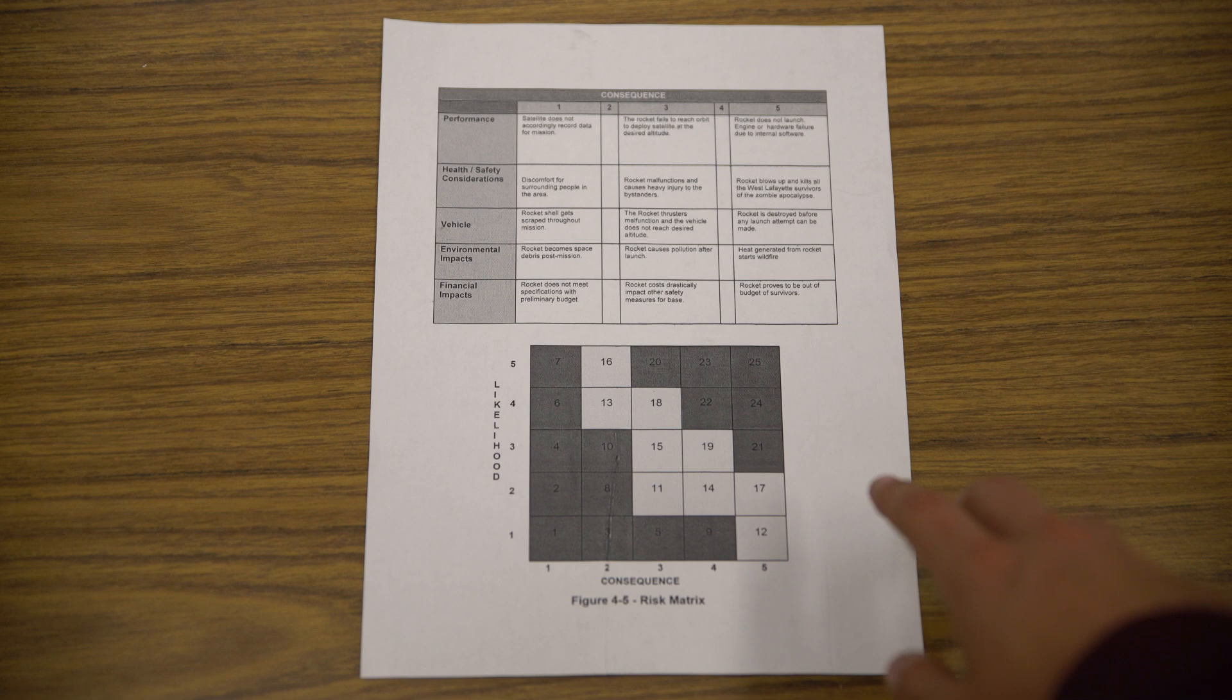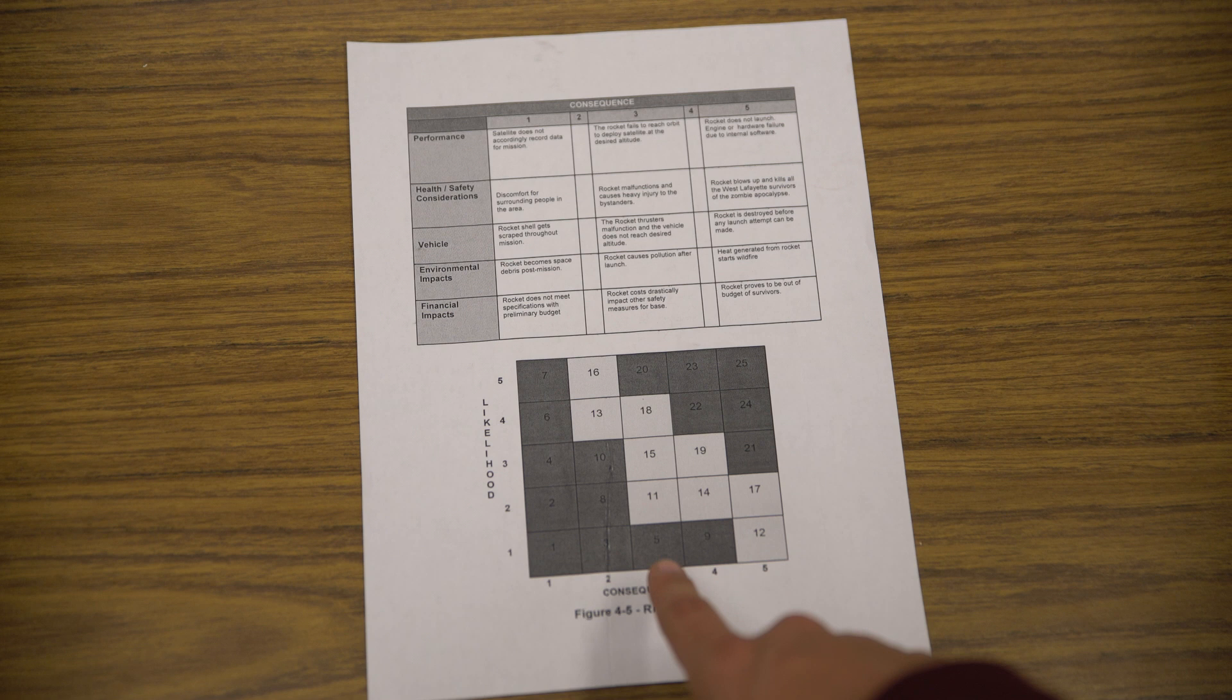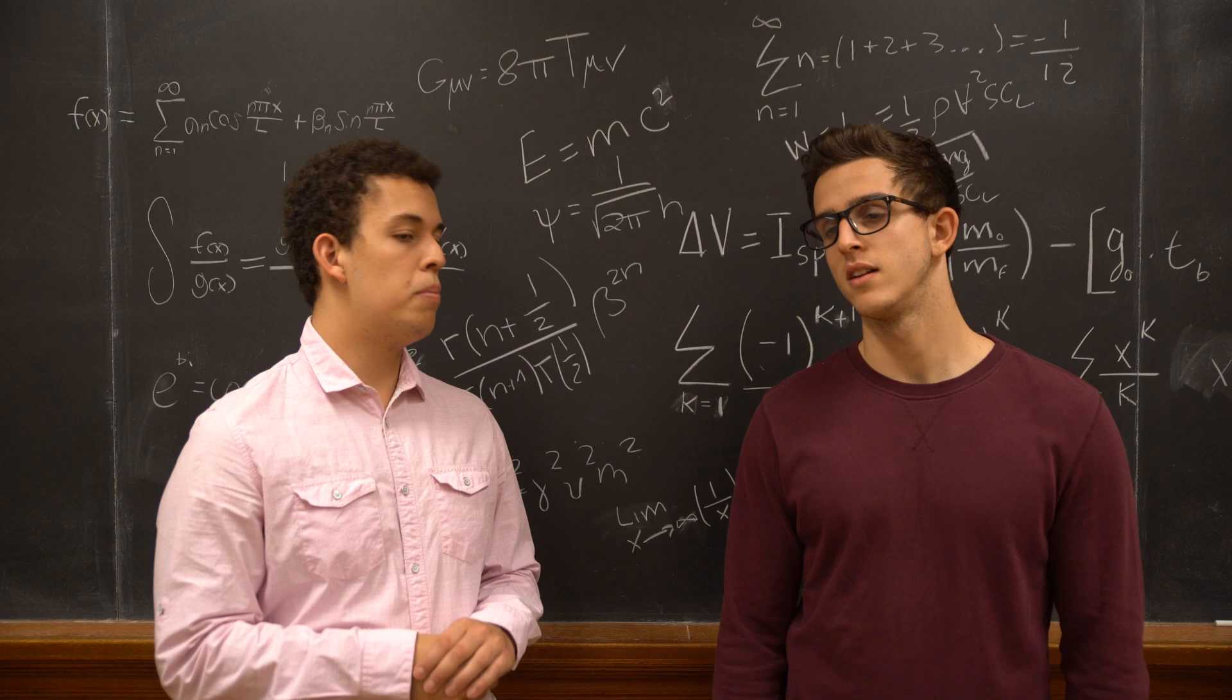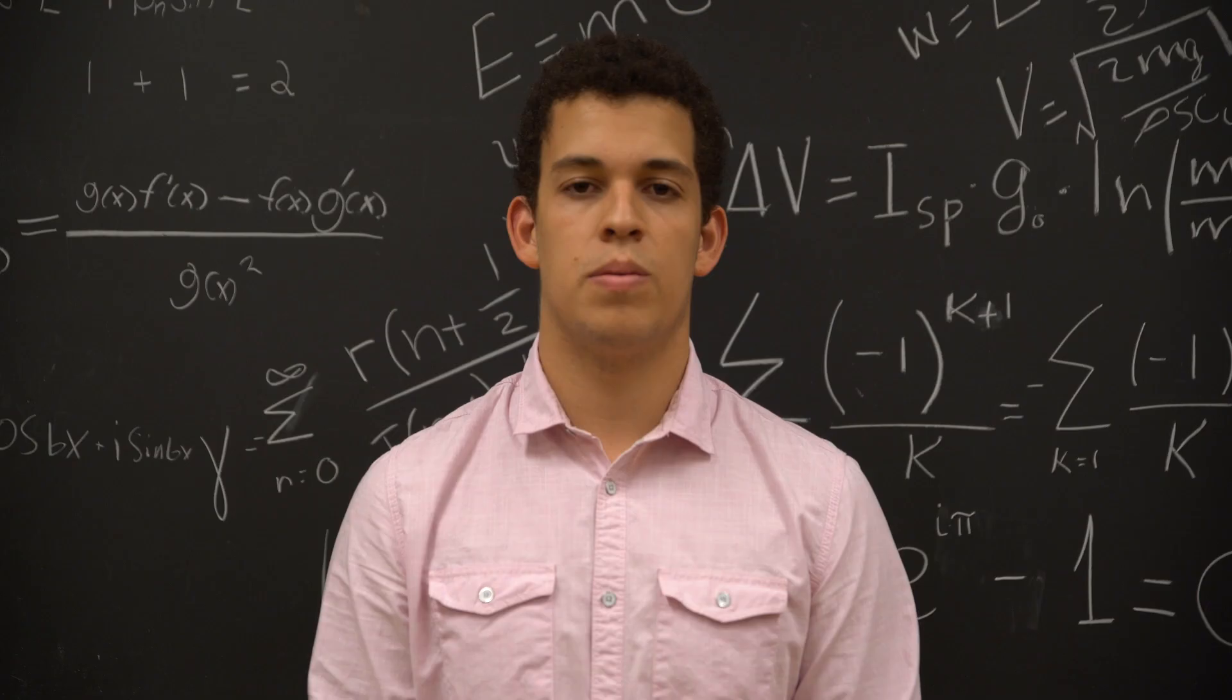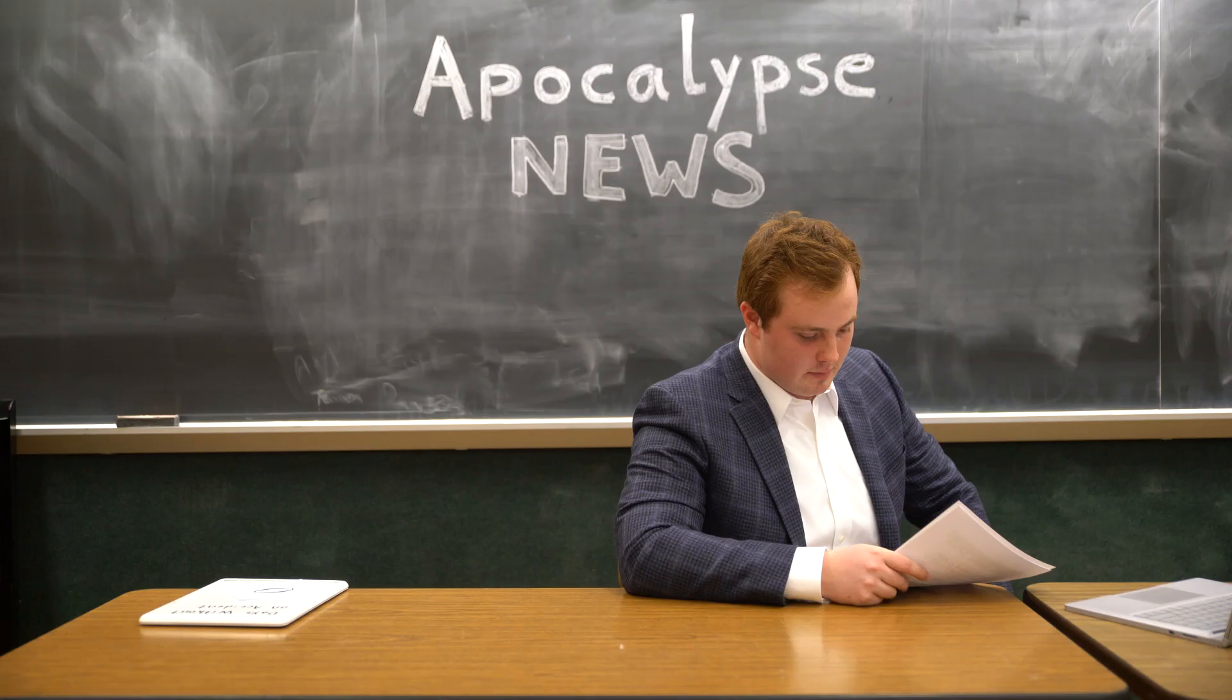The possible consequences of an event and the likelihood of an event happening are noted by these two axes. Risk is measured as the combination of these two factors. So, the rocket blowing up, that would be a bad thing, wouldn't it? Yes. Thank you, Roberto. So, there you have it. That's Team R09's plan to save the human species. Back to you, Cole.